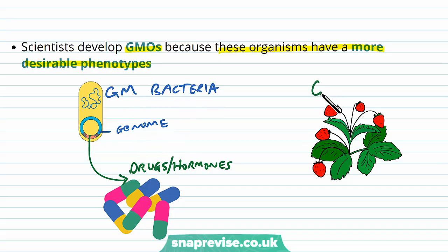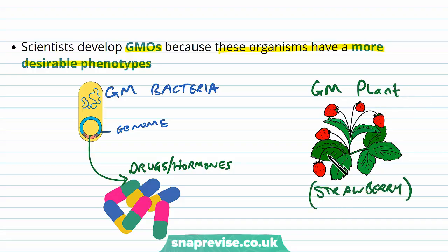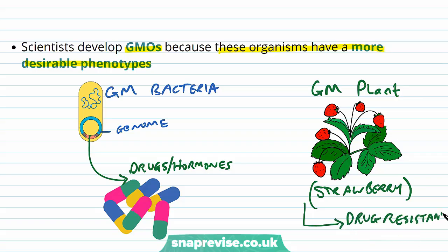Another example is a genetically modified plant — the strawberry plant — which we've genetically modified to become drug resistant. This means that when we spray pesticides and insecticides over particular farm areas, the actual strawberries are okay and they won't suffer from the drug.